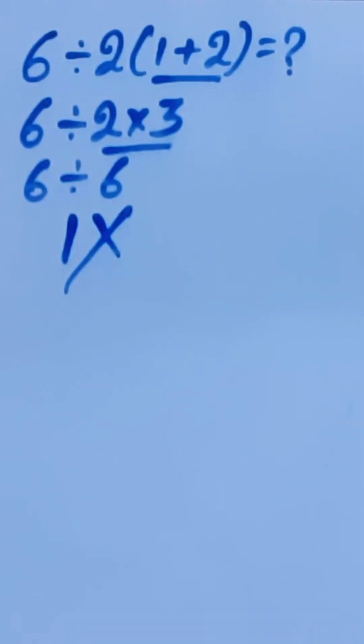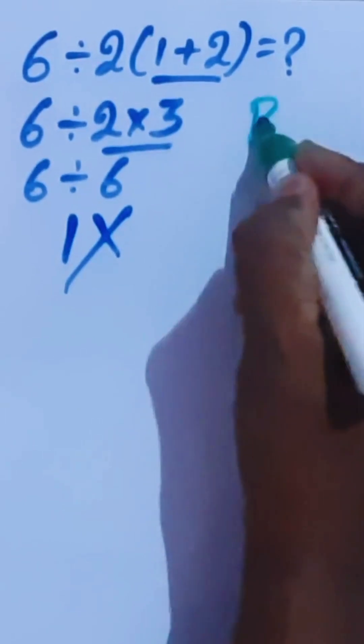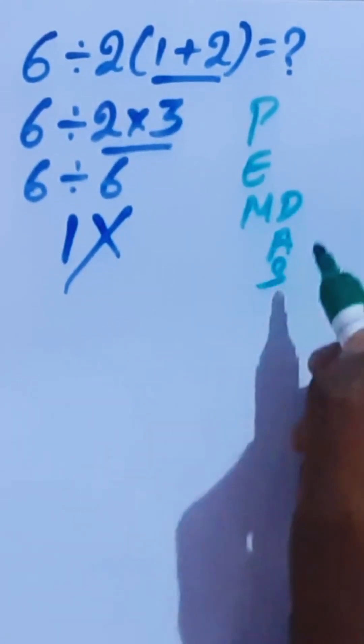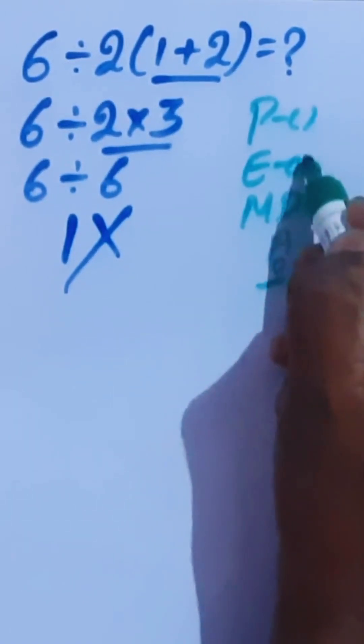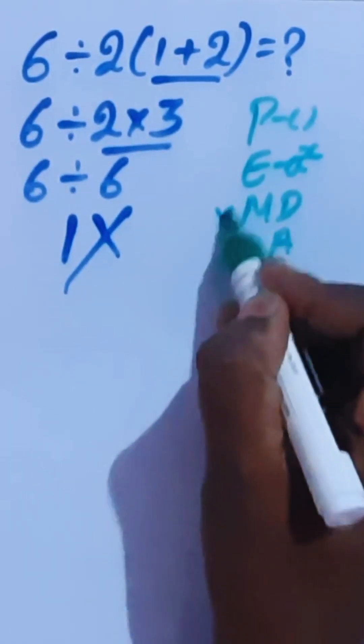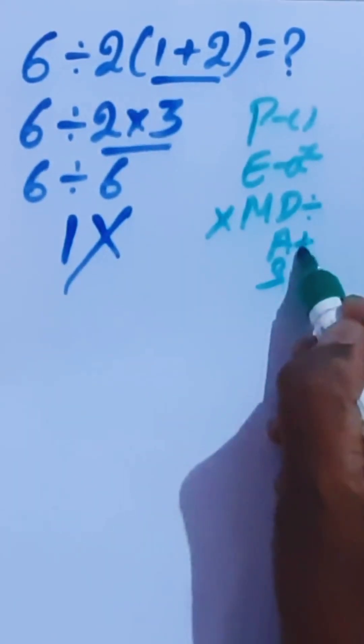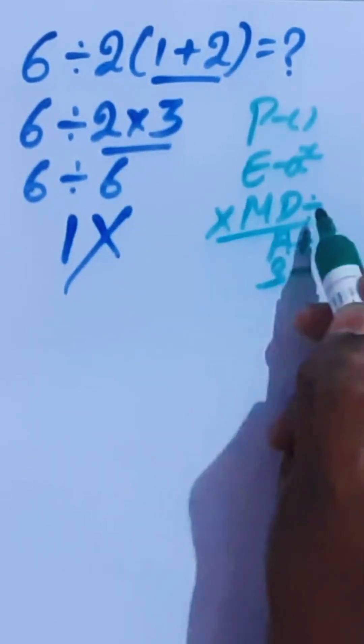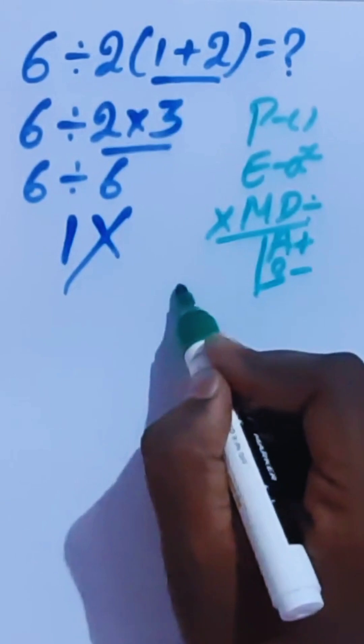1 is the wrong answer. Now we're going to introduce the PEMDAS rule from order of operations. PEMDAS: P stands for parentheses (bracket), E is exponent, M stands for multiplication, D stands for division, A stands for addition, and S stands for subtraction. Multiplication and division have equal priority, and addition and subtraction have equal priority.